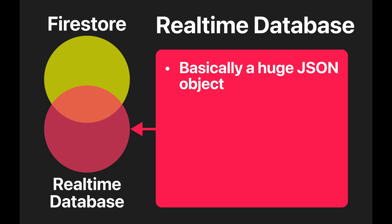The real-time database, on the other hand, has a simpler way of storing data. You can think of the real-time database as a huge JSON object. But this simplicity comes with a cost — the cost of having your data in this unorganized and hierarchical data model that presents problems for bigger projects.